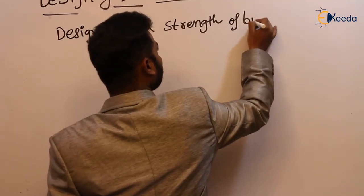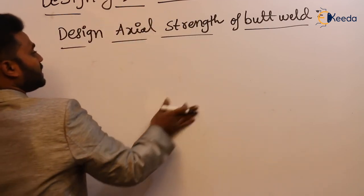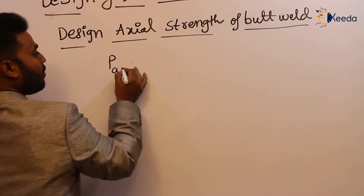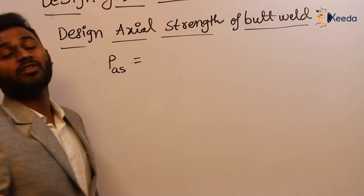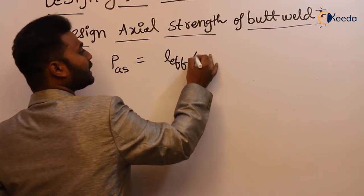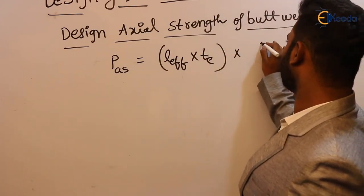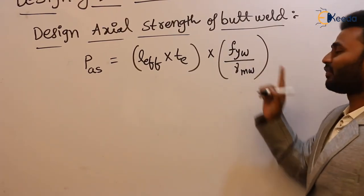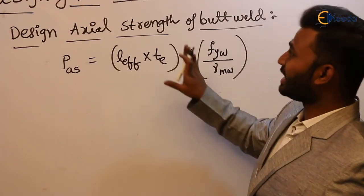Design axial strength of butt weld equals stress into area. Area is L_effective into T_E — that is, width of the connecting member into T_E. The stress here is F_YW divided by gamma_MW — yield stress of weld divided by the factor of safety. There is an axial force, so there is a chance of yielding, and we have to consider yield stress. That is the design axial strength of the butt weld.